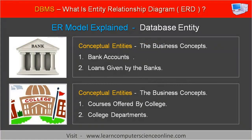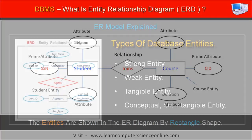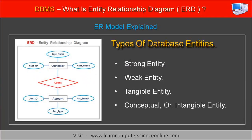Business concepts such as bank account, loans given by banks, and educational courses are also examples of valid entities. Such conceptual entities are represented by an entity in the database design that we wish to record information about in the database. The entity is shown in the ER diagram as a rectangle shape, and the relationship between two entities is indicated by a diamond shape. The ER diagram uses different types of entities, including: Strong entity, Weak entity, Tangible entity, and Conceptual or intangible entity.